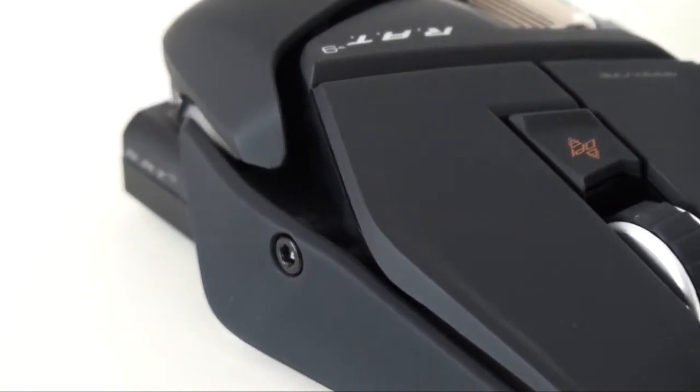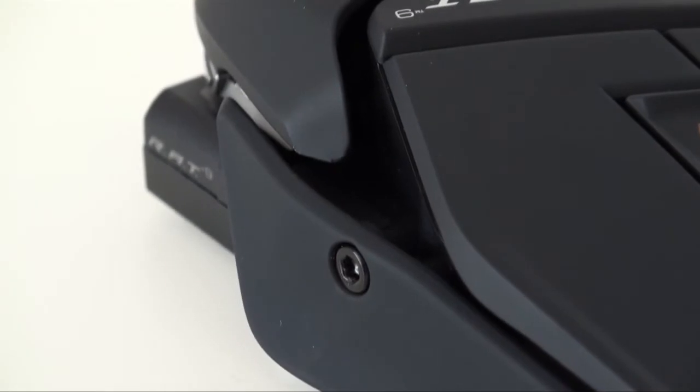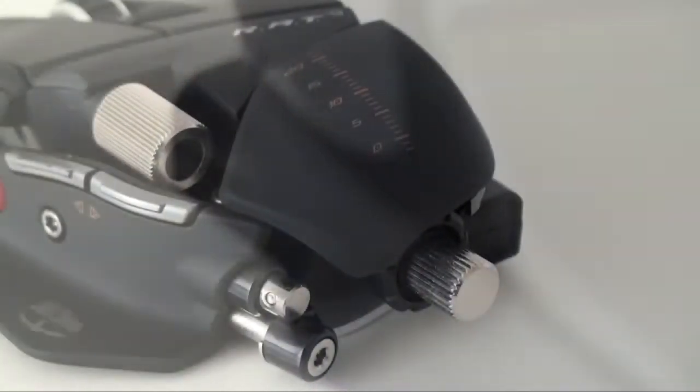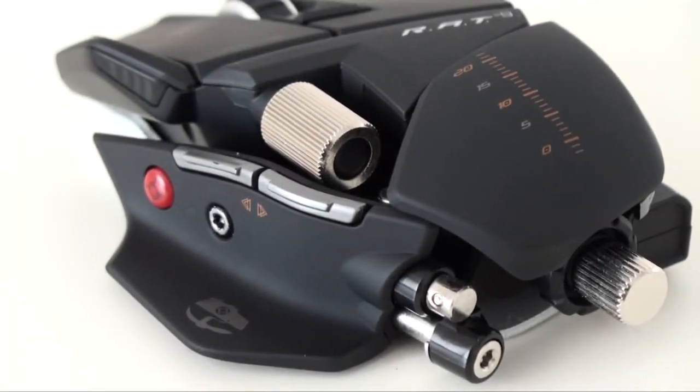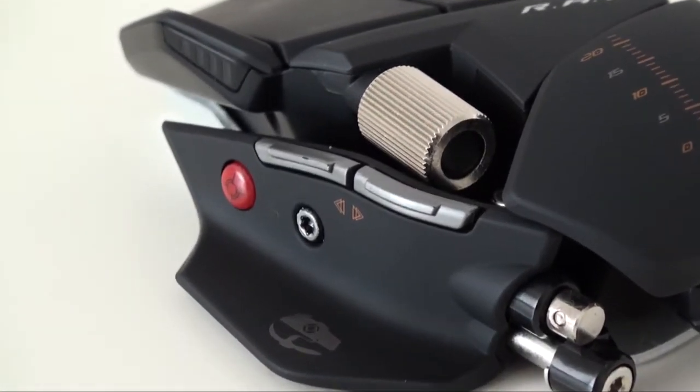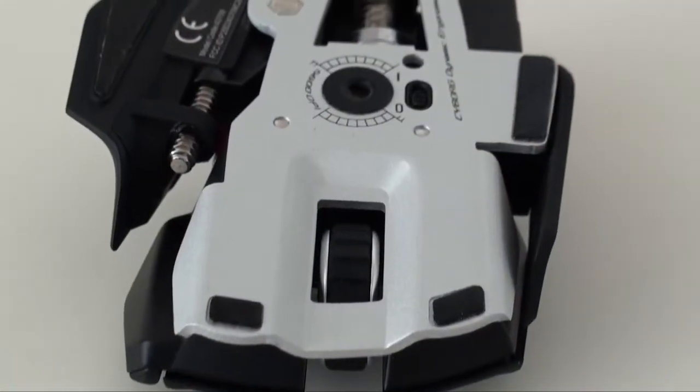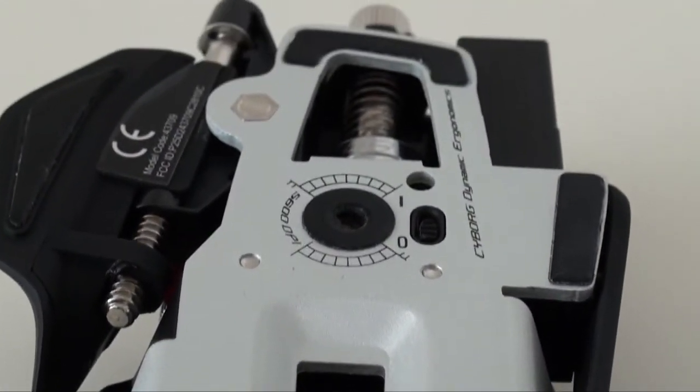You can see the battery back there. Here are two thumb buttons and a precision aim button, which lowers the sensitivity whenever it is held down. Here's the side of the mouse, very solid construction. Power switch is right beside the sensor, weights are back there.